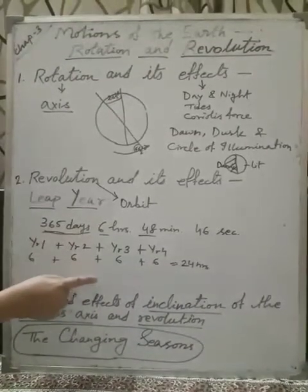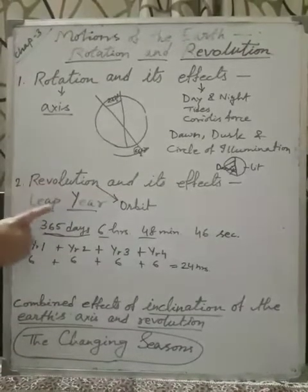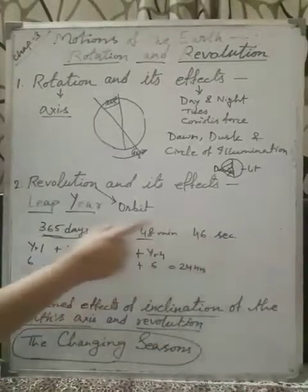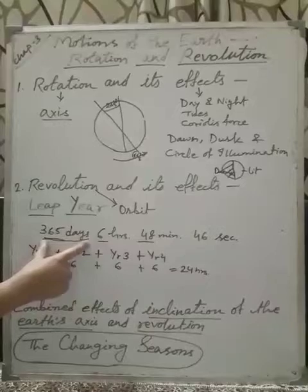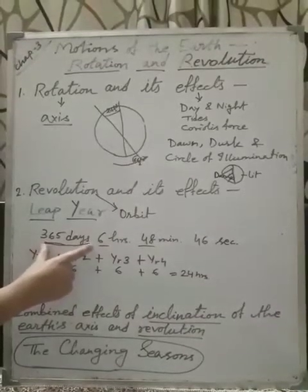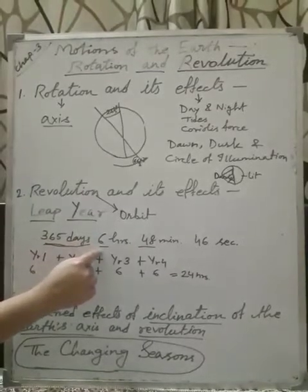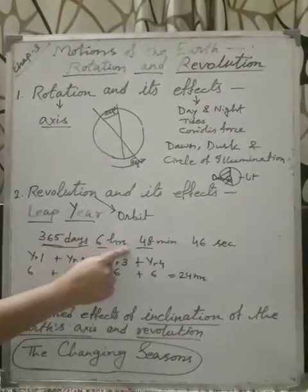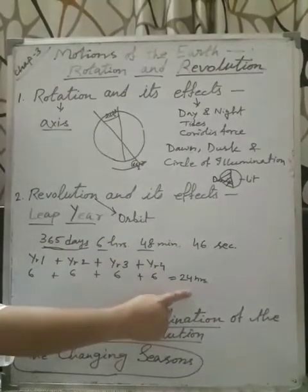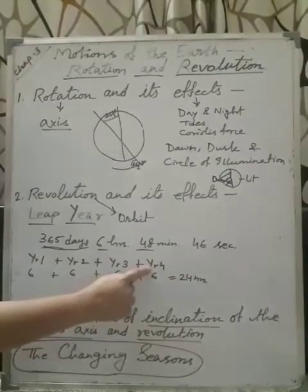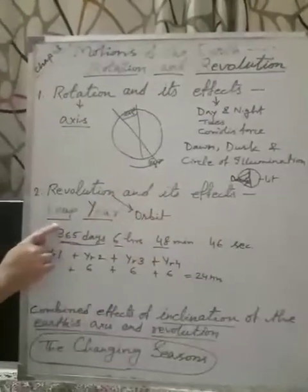And this leap year form due to revolution. Because to complete one revolution, Earth takes this much time. But, we are taking only first figure to indicate one year completed means 365 days. And we are not taking this 6 hours. So, after 4 years, it converted into 24 hours. And we know 24 hours means one day which we can add with this 4th year. Like this way, leap year form. And this is the effect of revolution.